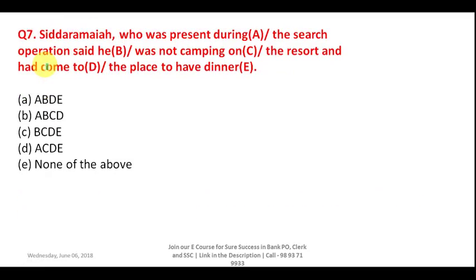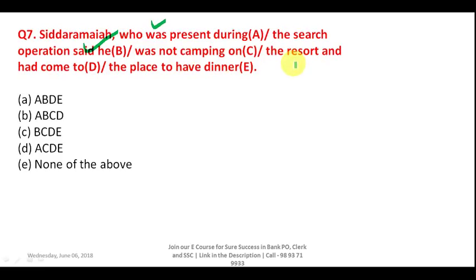Question 7: 'Siddharamaiah, who was present during the search operation, said he wasn't camping on the resort and had come to the place to have dinner.' The sentence is in past tense. He said something, and before he said it he had already done something — so this is past to past. He was not camping on the resort — you do not camp 'on' the resort, you camp 'at' the resort, because you are talking about a particular point.